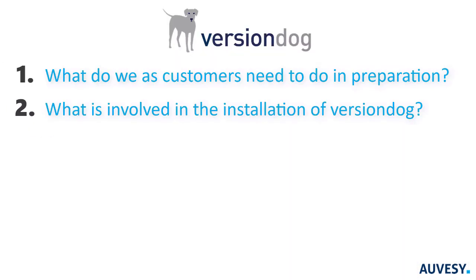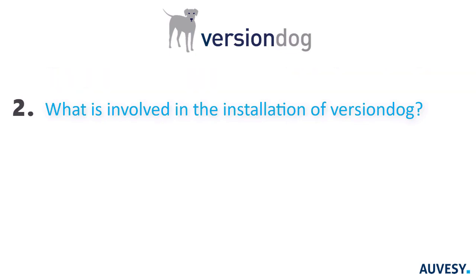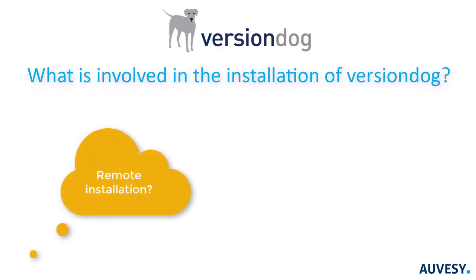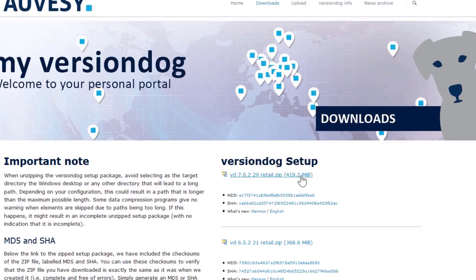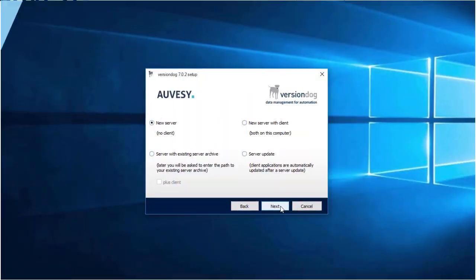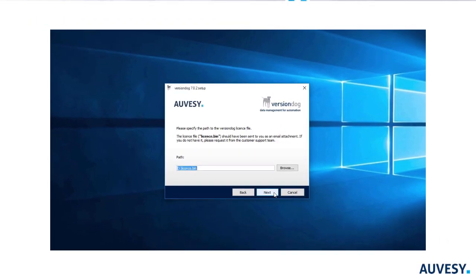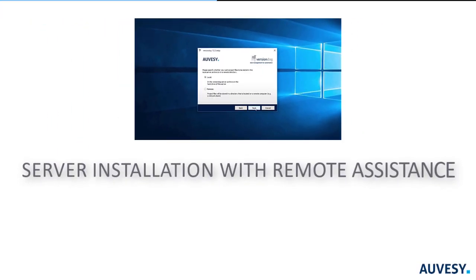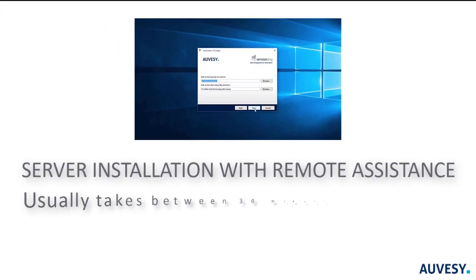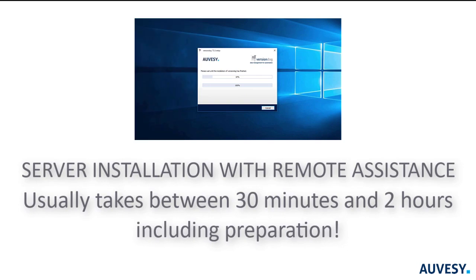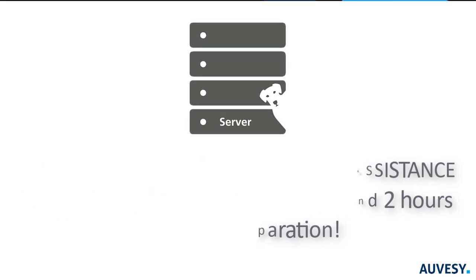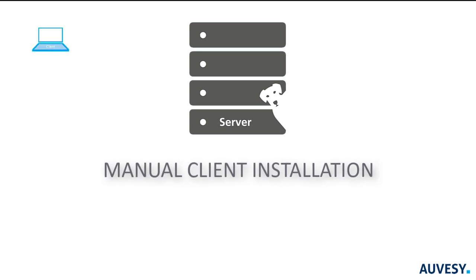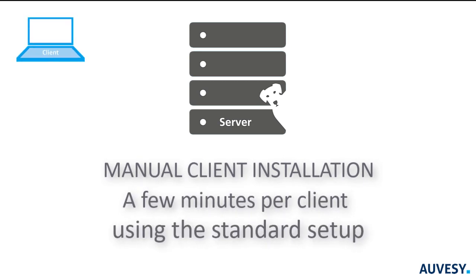What is involved in the installation of VersionDog? Can we do it ourselves, or do we need a visit from VAZ system integration? Downloading, installing, and activating the VersionDog software with remote assistance from a VAZ system integrator — for test purposes or to save time later — normally takes between half an hour and two hours. A growing number of customers are choosing this option.